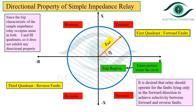Let us discuss the directional property of the simple impedance relay. The first quadrant of the RX plane represents a forward fault, whereas the third quadrant represents a reverse fault. From the RX characteristics, the impedance relay is a non-directional relay because its characteristic is a circle occupying both the first and third quadrants. Thus the relay will trip for a fault in either the forward or the reverse direction. It is always desired that the relay should operate only for faults in the forward direction and never for faults in the reverse direction. Therefore, the simple impedance relay is not useful in situations where selectivity between forward and reverse faults must be maintained.